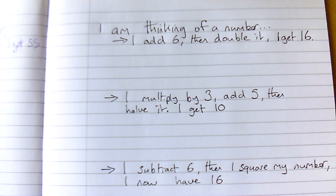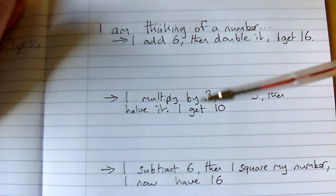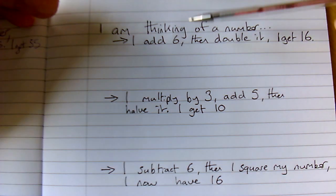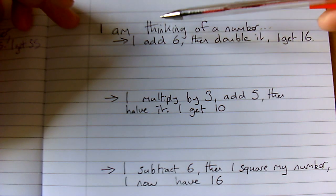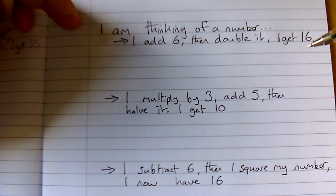Hello everyone, we're going to have a quick look at some solving questions where I am thinking of a number. For example, here I am thinking of a number. I add 6, then double it to get 16.